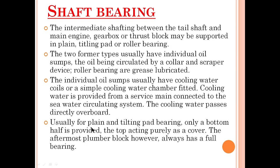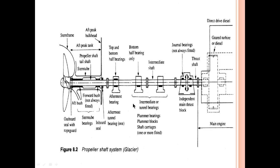Usually, for plain and tilting pad bearings, only a bottom half is provided, with the top part acting as a cover. The aftermost plumber block, however, always has a full bearing. As you can see in the diagram, in the intermediate shaft this part consists only of the lower half of the bearing, and the top part acts just like a cover. But here in the aftermost position, the bearing is supported by both top and bottom parts.